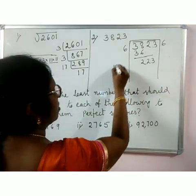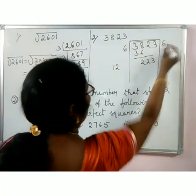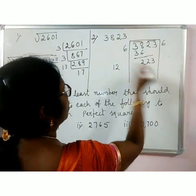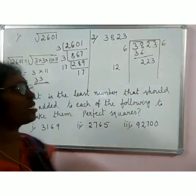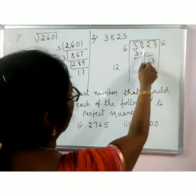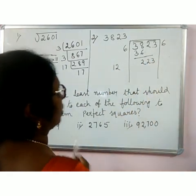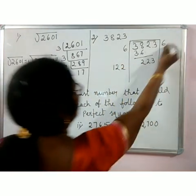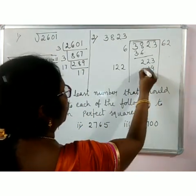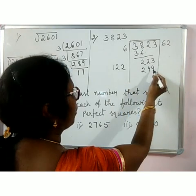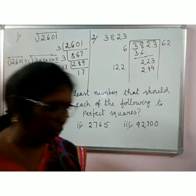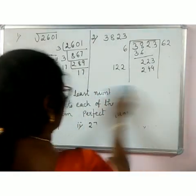38 minus 36 is 2, remainder 2. Bring down 23 to get 223. Double the quotient 6 to get 12. Try writing 1 in the next digit: 121 × 1 = 121. Try writing 2: 122 × 2 = 244. But 244 is greater than 223, so we can't use 2. Therefore the quotient so far is 61, with remainder 223 minus 121 = 102... actually 244 is more than 223.